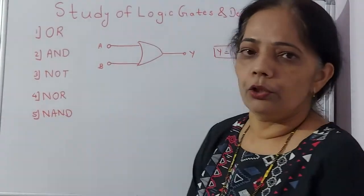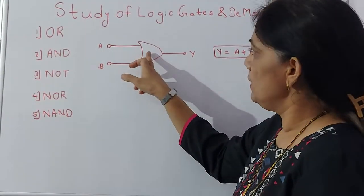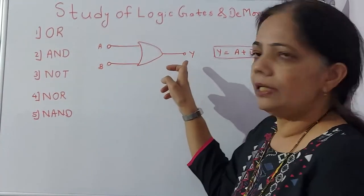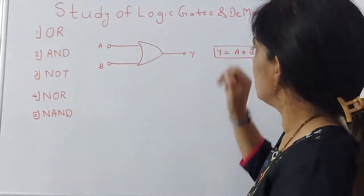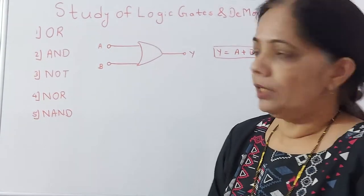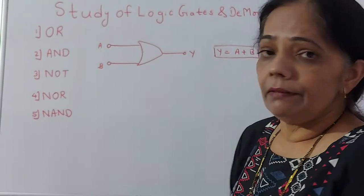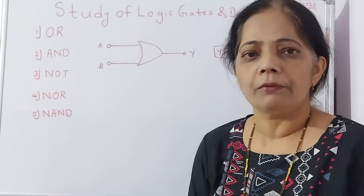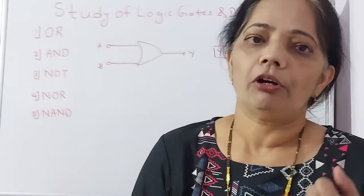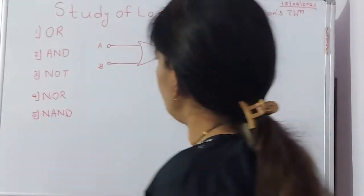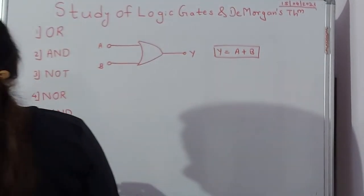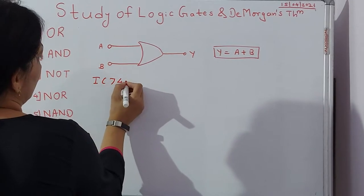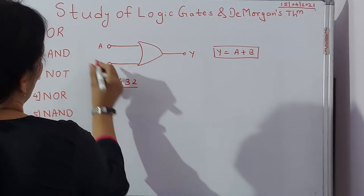We begin with the first gate, the OR gate. For the OR gate you draw the basic symbol with input A, input B, and output Y, and the equation is Y = A + B. The IC available in the market to check if the OR gate is working properly is IC 7432, which is a 14-pin IC.